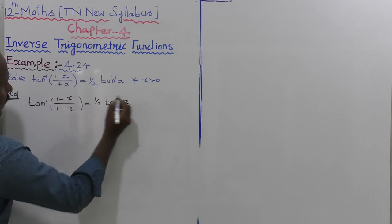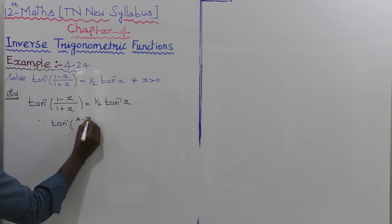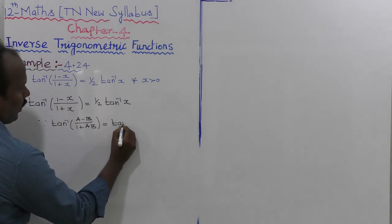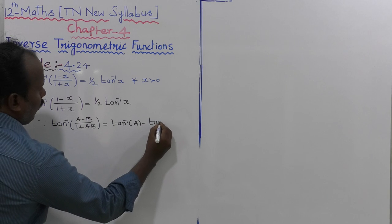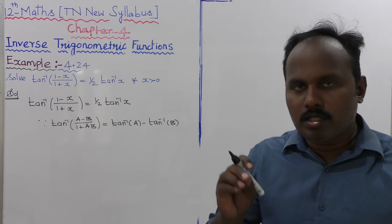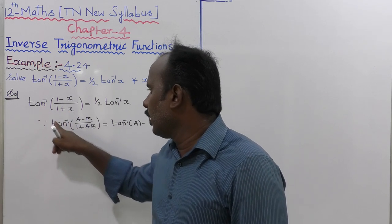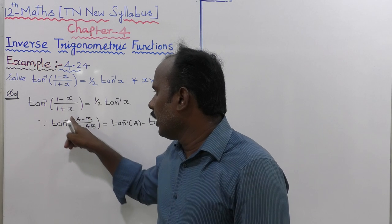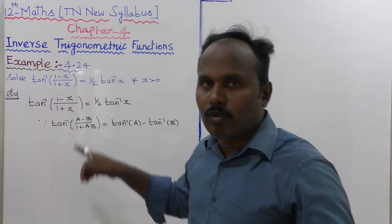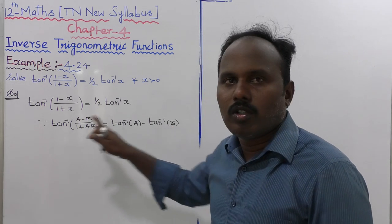We use the formula: tan inverse of (a minus b) divided by (1 plus ab) is equal to tan inverse of a minus tan inverse of b. So for tan inverse of (1 minus x) divided by (1 plus x), the left side matches this formula where a is equal to 1 and b is equal to x, since ab equals x times 1 equals x.